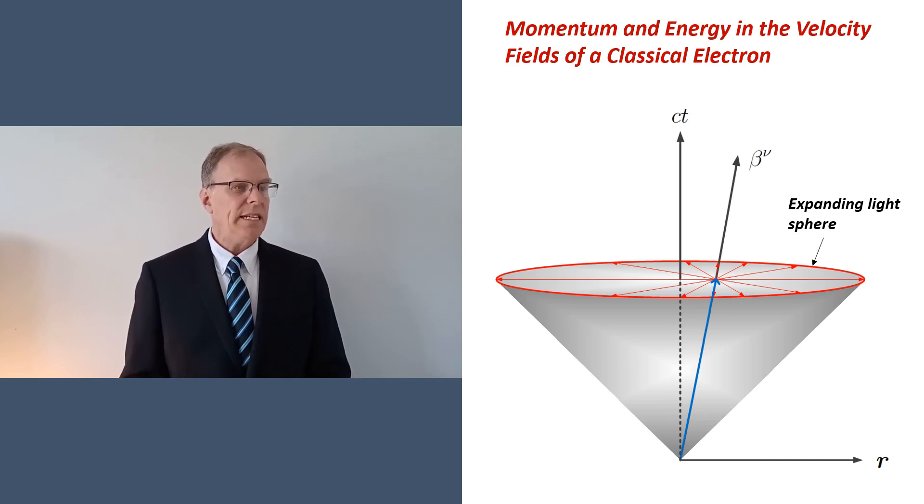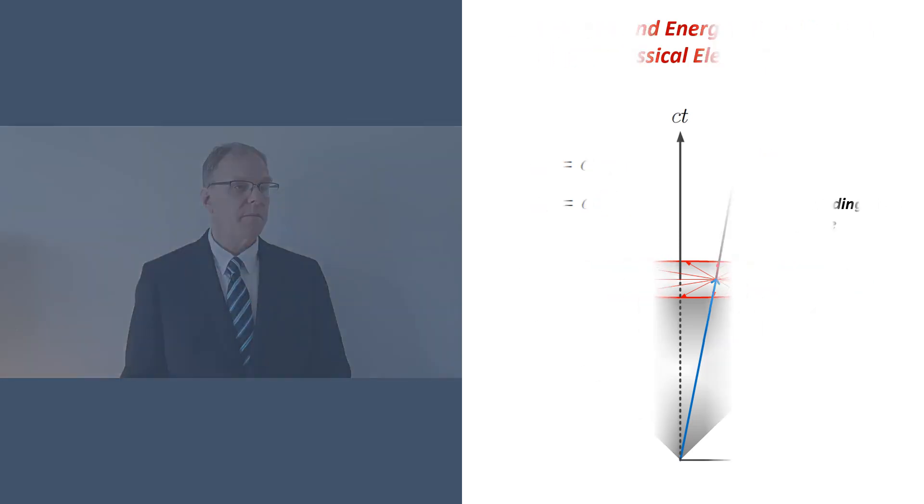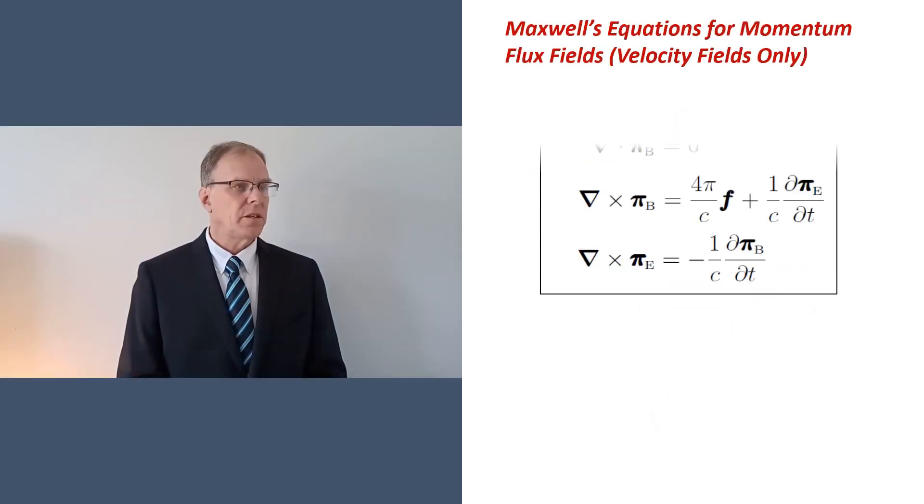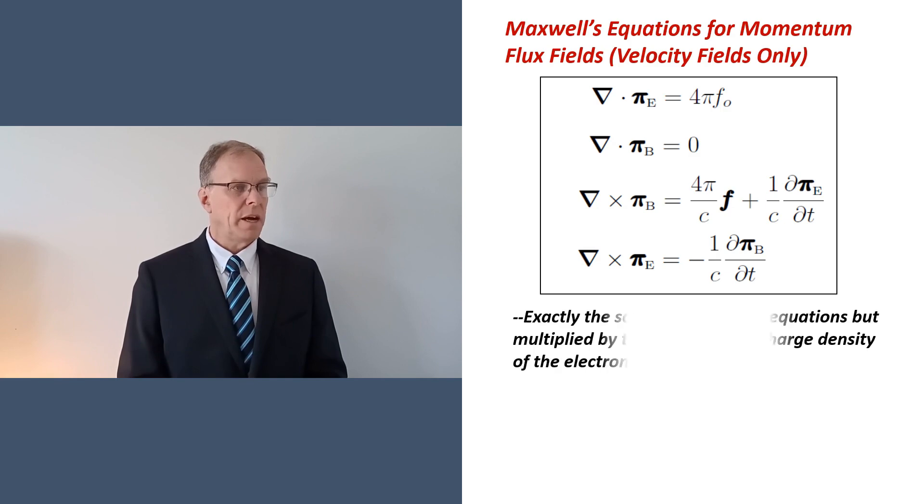Having said that, it's easy to write down momentum flux fields simply by multiplying the electric and magnetic fields of the particle by a fundamental surface charge density. From here, it's trivial to write Maxwell's equations for radiating Coulomb fields. For velocity fields only, just multiply each equation by the fundamental charge density.